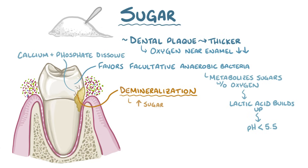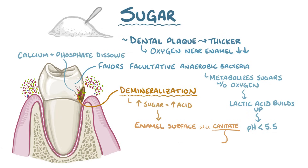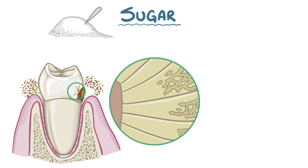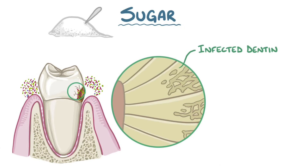Every time sugar enters the mouth, the bacteria are able to produce more acid, and this destruction in the subsurface continues until the surface gets so thin that it collapses, like walking on thin ice. Intact enamel keeps bacteria out of the dentin because they do not fit through the enamel diffusion channels. However, if demineralization is allowed to continue, the enamel surface will cavitate to expose the dentin, which will allow bacteria to enter the dentin. Once bacteria are in the dentin, it's called infected dentin, and usually requires a restoration or filling.